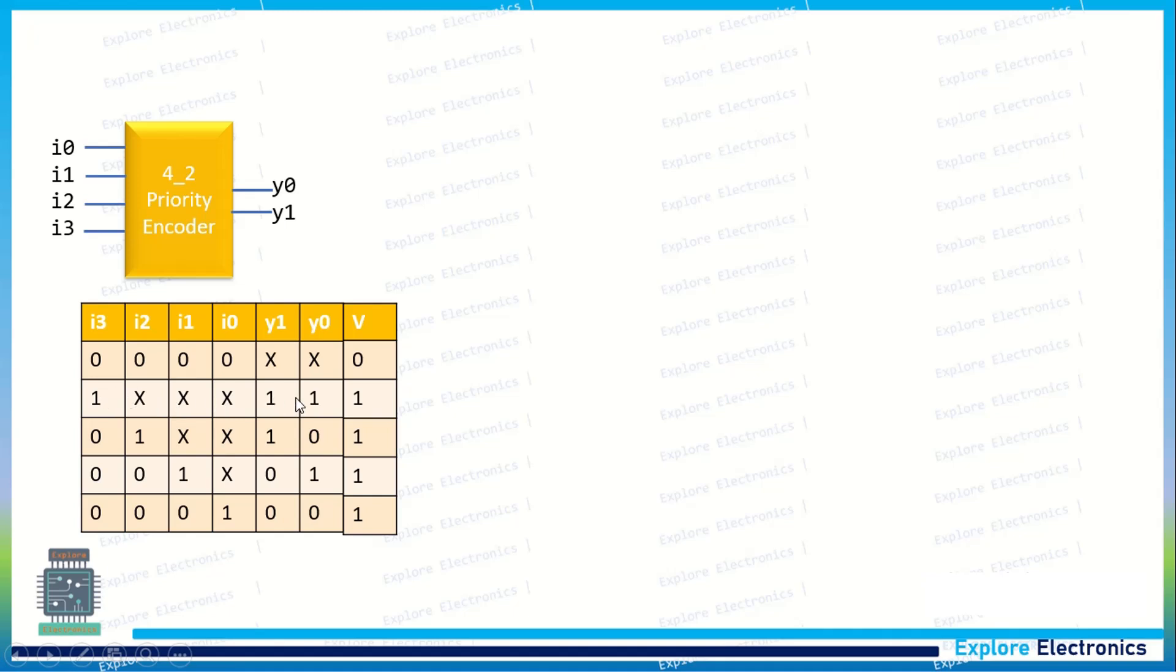And then when i2 is equal to 1, we are supposed to encode, means i3 should be 0. If i3 becomes 1, it will automatically encode to 1, 1 itself. So when i3 is 0 and the next highest priority is for i2, that's why the lower bits after i2 can be don't care.